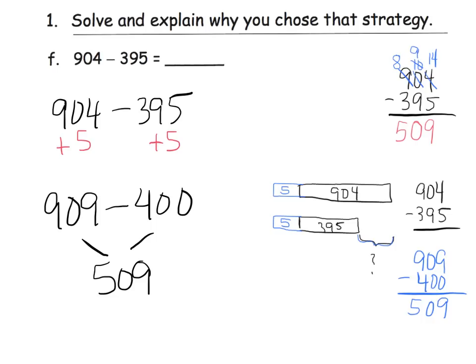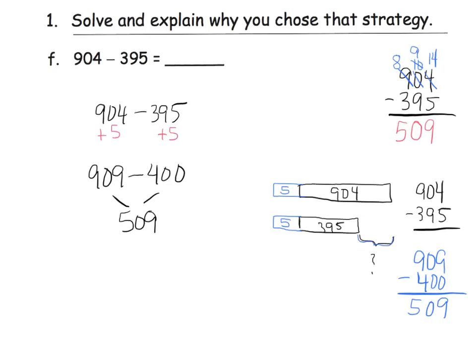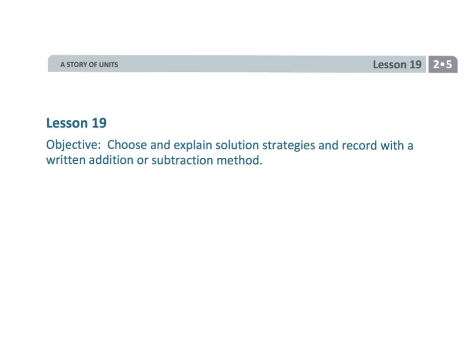So it's the same kind of system as over here, just written in a different notation. And so there's three different ways that all show that our answer is 509. And that wraps up lesson 19 of grade two, module five, where students are using a variety of solution methods to add or subtract.